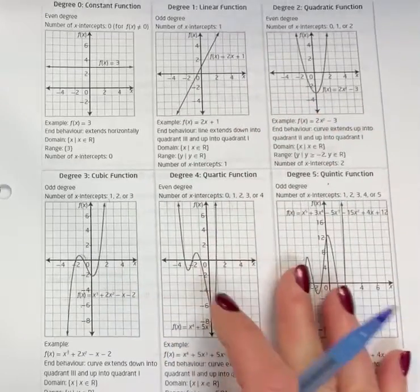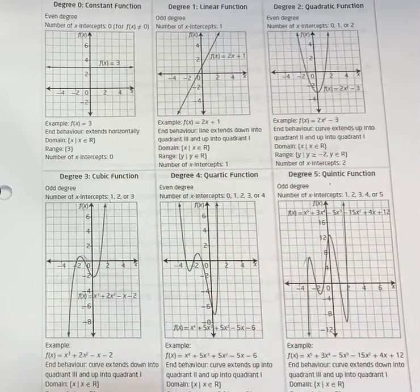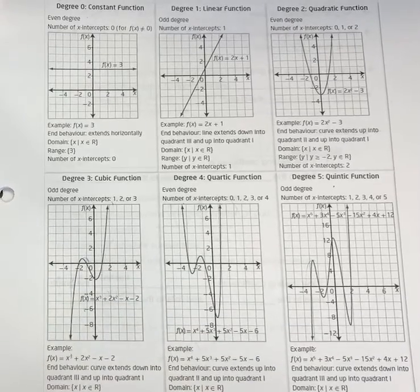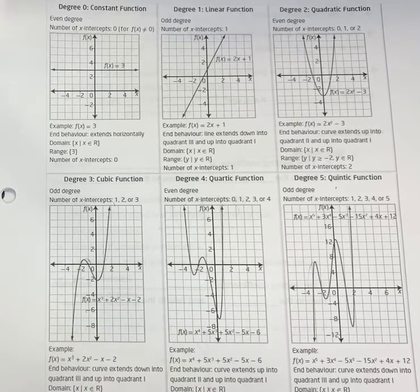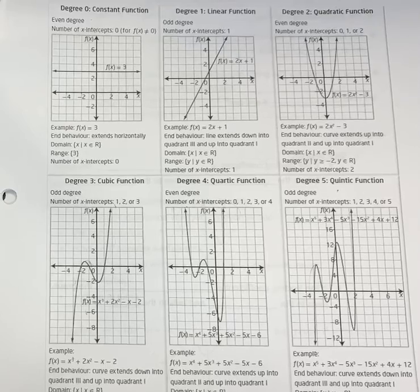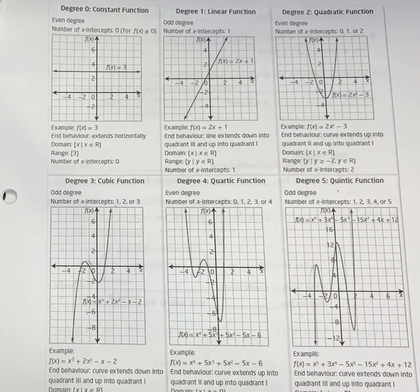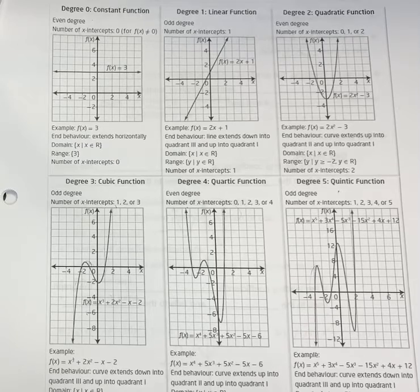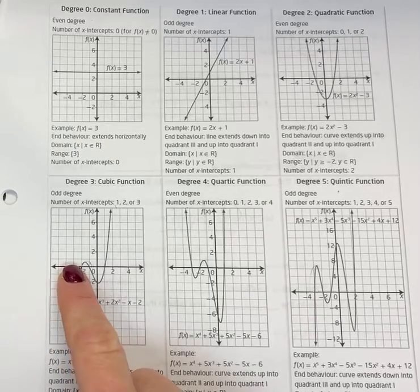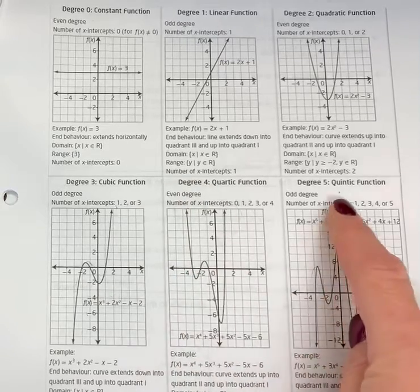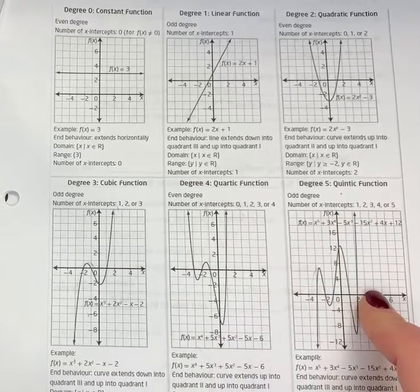One of the first things I want to point out: if something has however many x's there are—or I should say, the degree—that would make it easier to understand. Degree three would mean you could have up to three x-intercepts, so it crosses the graph one, two, three times. Degree four, it crosses four times; degree five, it crosses five times.